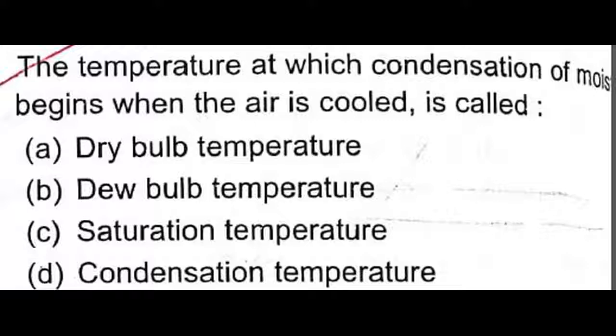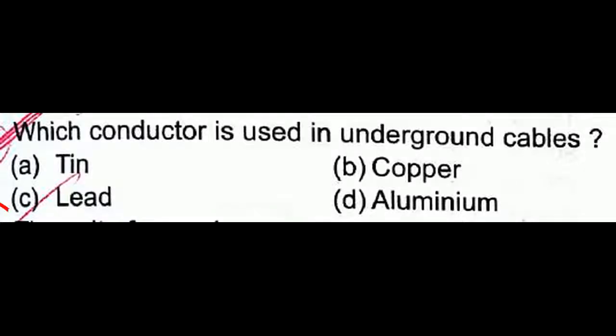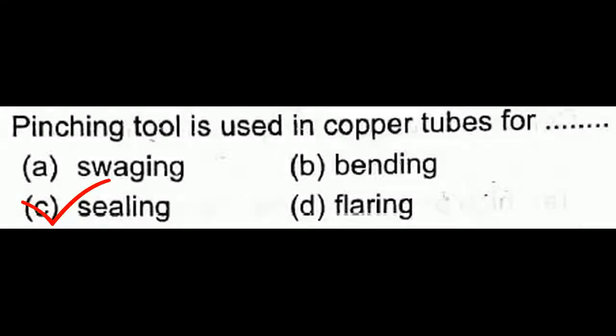An ammeter is connected in series in the circuit — option A is correct. The temperature at which condensation of moisture begins when air is cooled is called the dew point temperature. Lead is used as the conductor in underground cables. Thank you for watching — please subscribe to my channel, like, comment, and share.